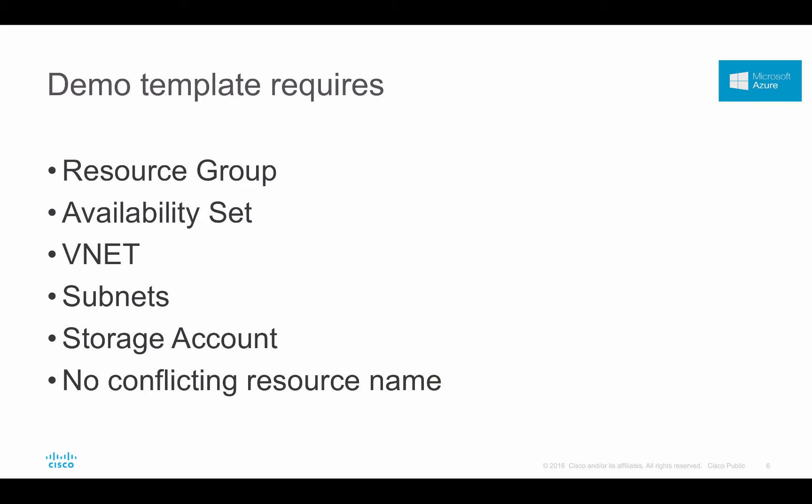My script requires you to create a resource group beforehand. These items are required to be created before initiating the template deployment: a valid resource group, a valid availability set, a VNet, and subnets. You should have four subnets because the ASAv image is a four-NIC image — it requires four subnets under the VNet — and then a storage account. Make sure there is no conflicting resource name.